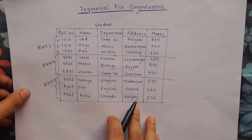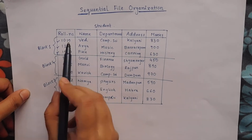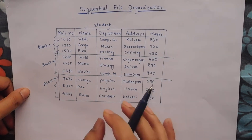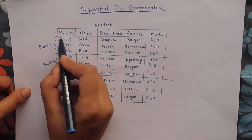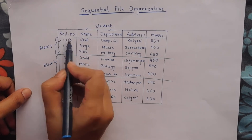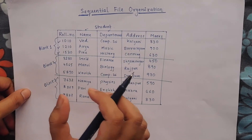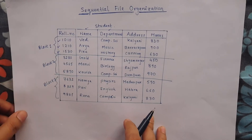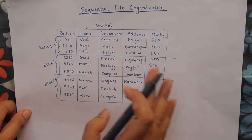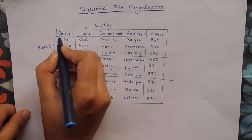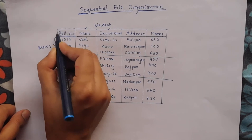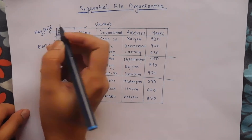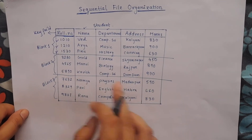In a sequential file, every record has a fixed number of fields. Here roll number is a field, name is also a field, department, address, and marks — they are the fields. Each field has a specific size; for example, roll number may be 16 bytes. There is a key field that uniquely identifies each of the records. Here, roll number is our key field.